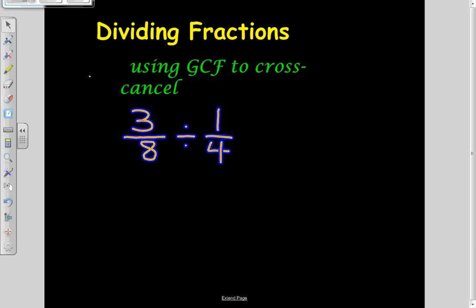All right, we're going to look at dividing fractions using the greatest common factor to cross-cancel. My example problem is 3 eighths divided by 1 fourth.